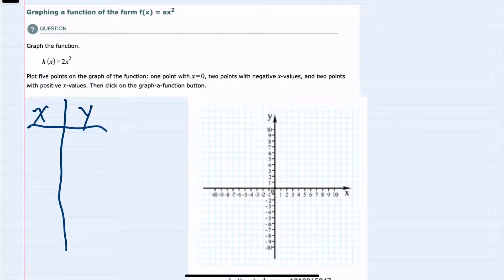We're told one of those points should be where x equals zero, and that we should also use a couple of negative values, so negative one and negative two, and a couple of positive x values, so one and two.